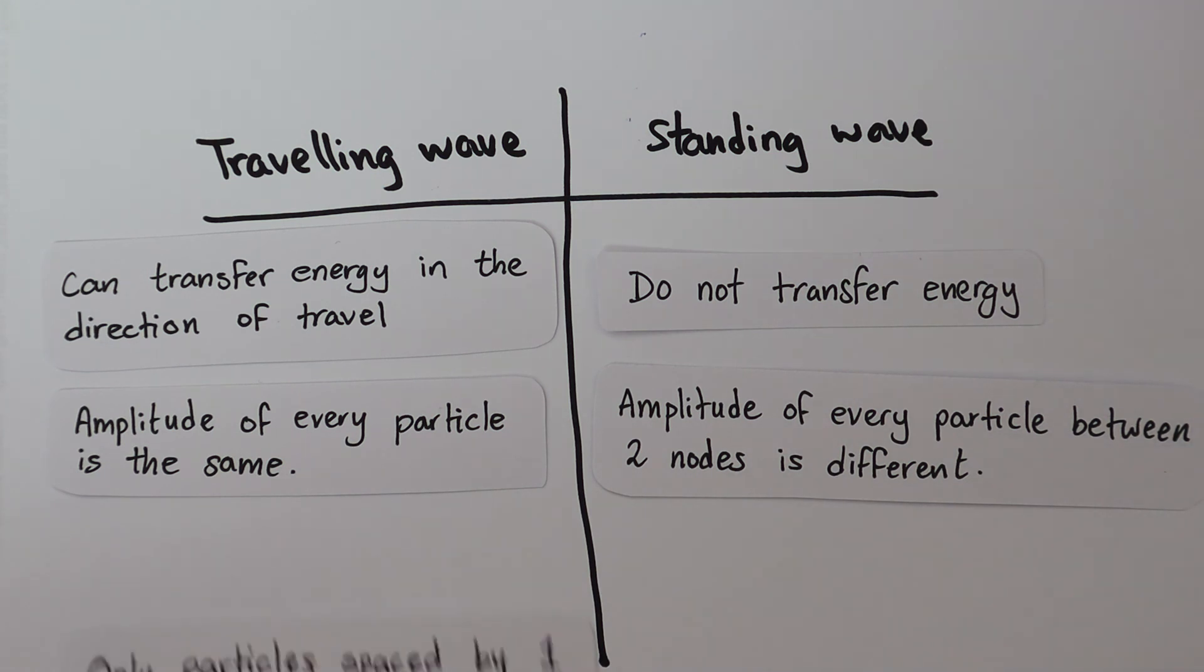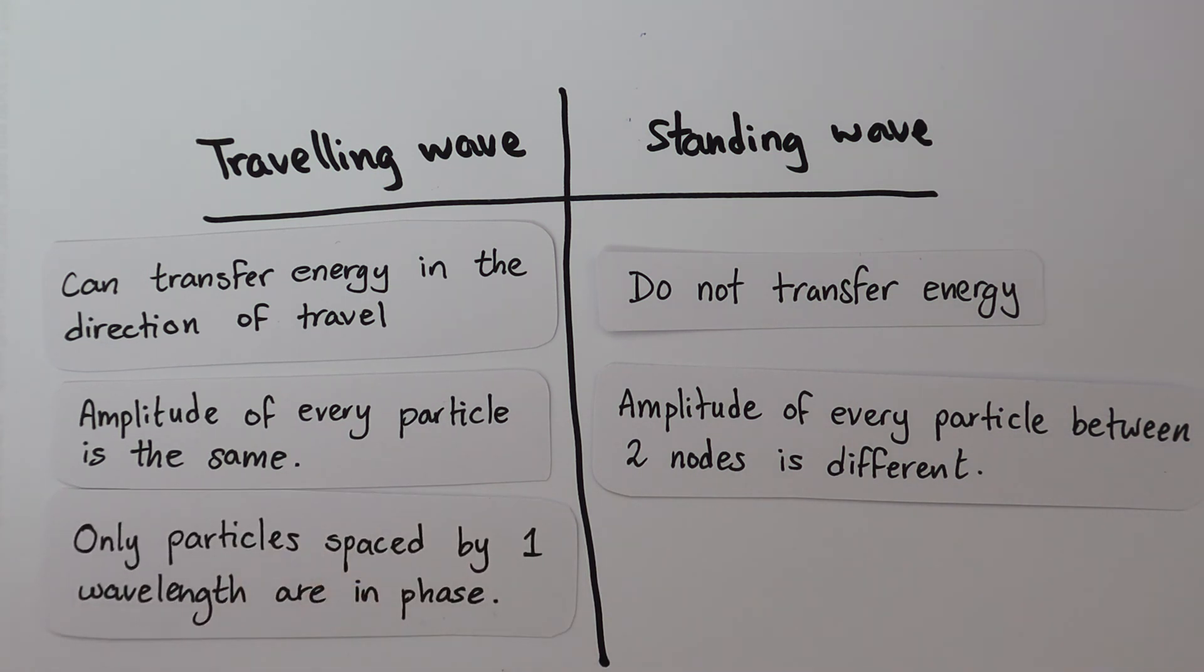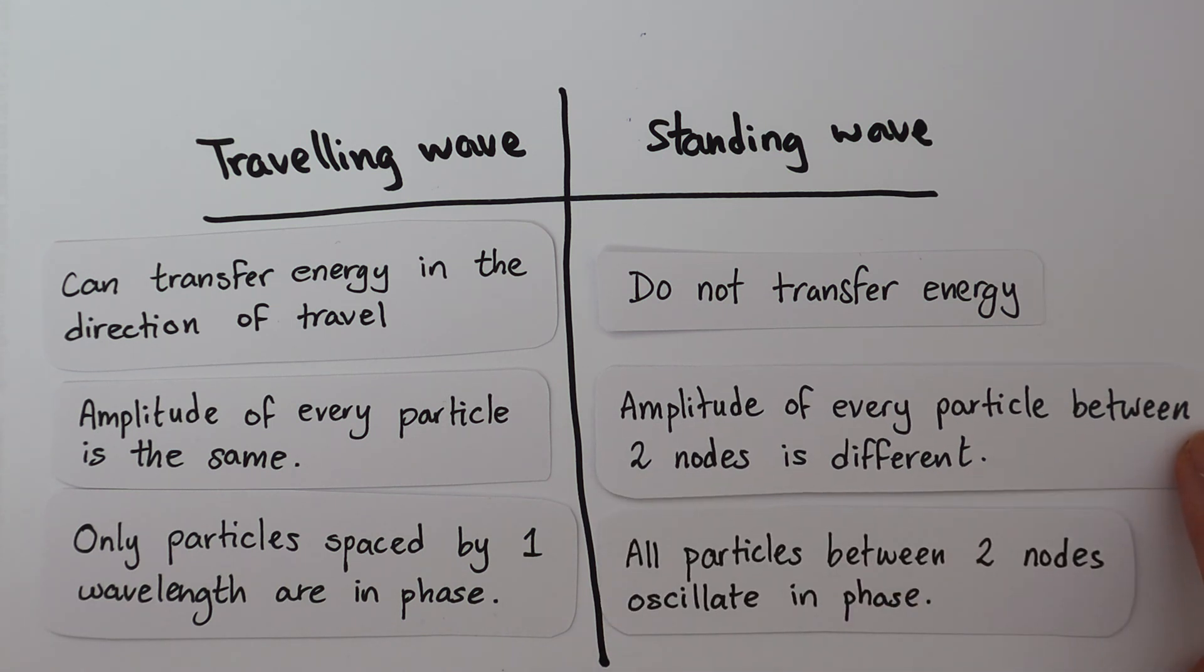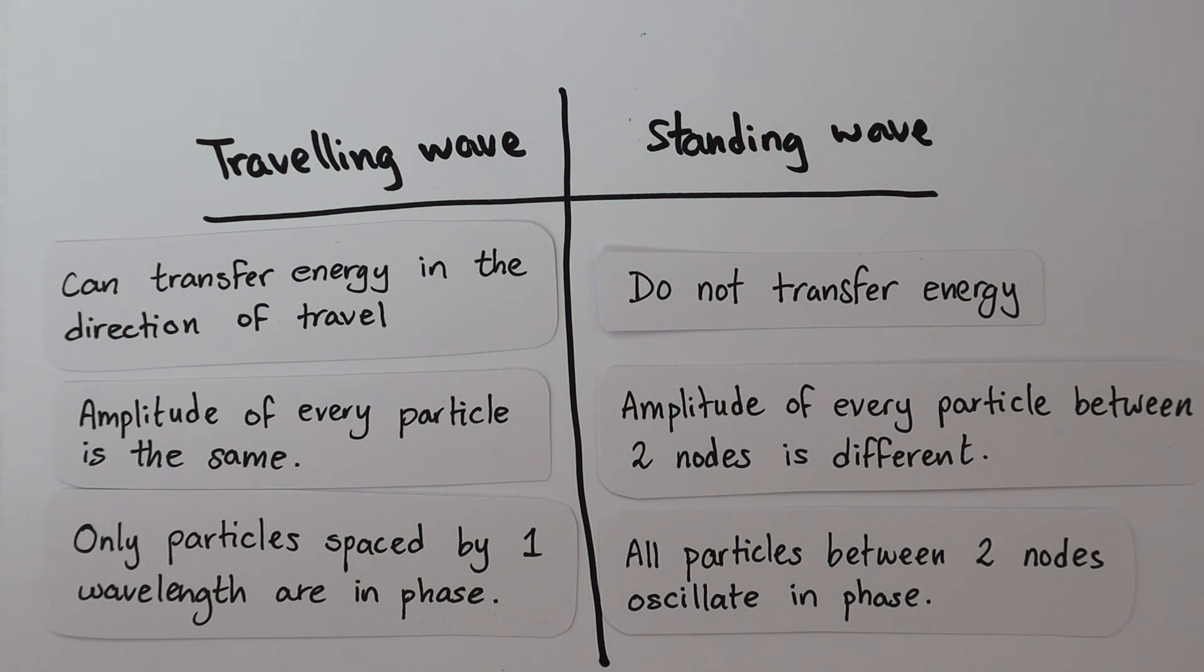In a traveling wave, the particles are only back in phase after one whole wavelength, but all particles between two nodes are in phase in a standing wave.